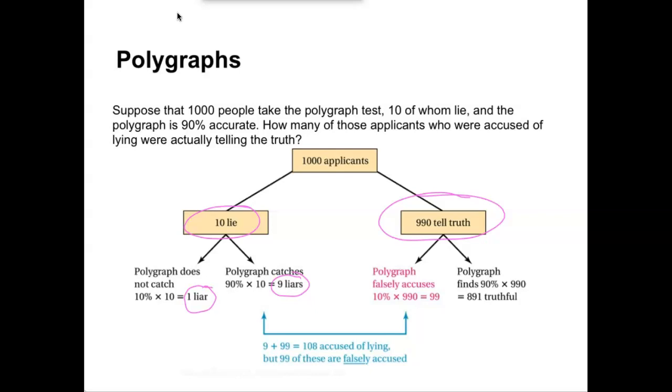The remaining 990 are telling the truth, but again the polygraph is only 90 percent accurate, so it's only going to tell us that 90 percent of 990, or 891, are telling the truth correctly. But it's going to falsely accuse 10 percent of those, so 10 percent of 990 is 99. There are going to be these 99 plus these 9 people that are accused of lying, but only 9 out of that 108 are truly lying. So 9 divided by 108 is about 8 percent. In your polygraph test, if it tells you somebody is lying, there's still only about an 8 percent chance that they truly are lying, even if it's 90 percent accurate.